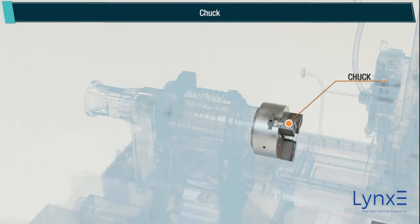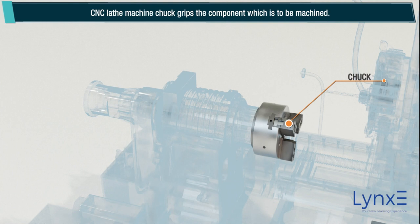Chuck: the CNC lathe machine chuck grips the component which is to be machined. It has 4 jaw or 3 jaw, according to the requirement of the machine.